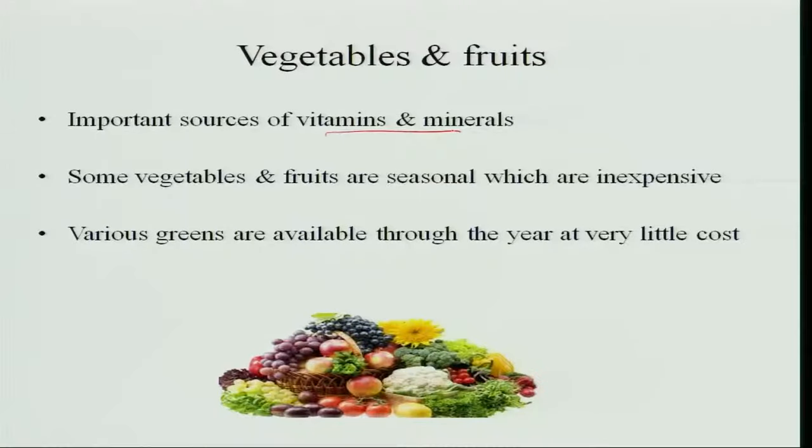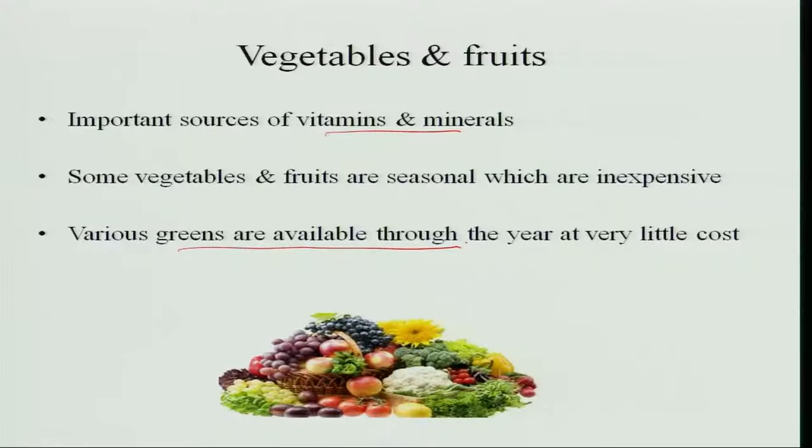Vegetables and fruits are important sources of vitamins and minerals. Seasonal vegetables become very inexpensive during their season — for example, tomatoes can cost 70 to 80 rupees per kg off-season but drop to 1 rupee per kg in season. Buy seasonal vegetables for economy. Various greens are available throughout the year — though some have a poor opinion that greens are a poor man's diet, greens are actually the richest sources of vitamins and minerals. One or another green leafy vegetable is available throughout the year, so make use of that to have nutritious food.